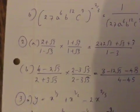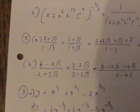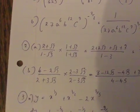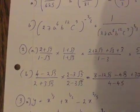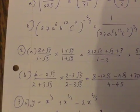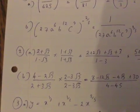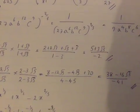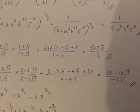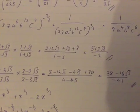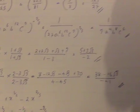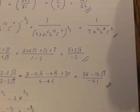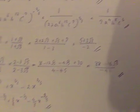Question 2, rationalizing. So (2 + √3) over (1 - √3) times (1 + √3) over (1 + √3), which becomes 2 + 2√3 + √3 + 3 over 1 minus 3, which is 5 + 3√3 over minus 2.